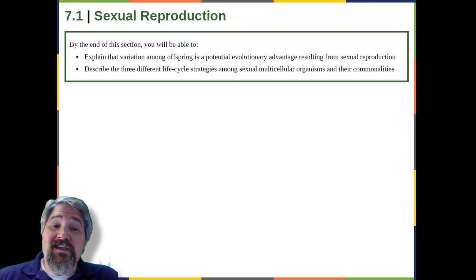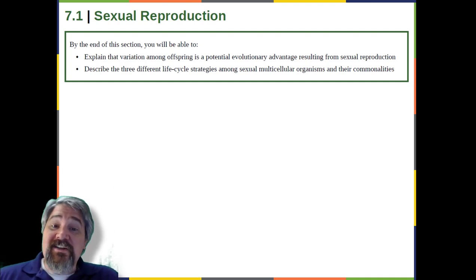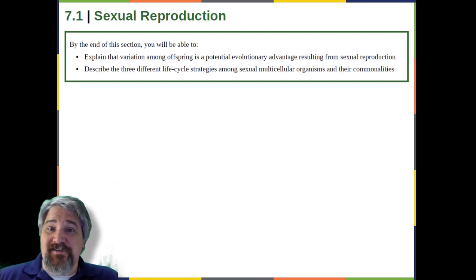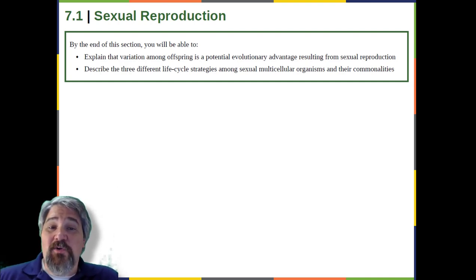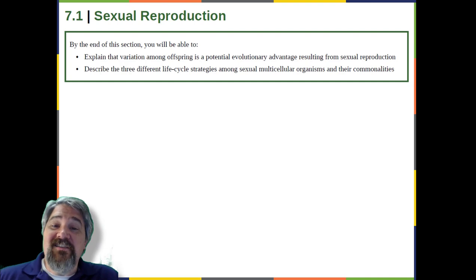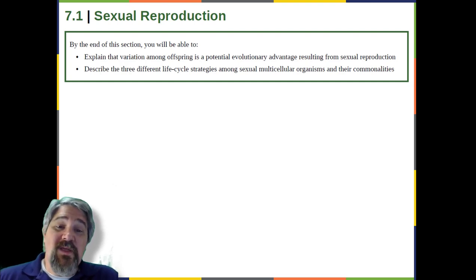Indeed, some organisms that lead a solitary lifestyle have retained the ability to reproduce asexually. In addition, asexual populations only have female individuals, so every individual is capable of reproduction. In contrast, the males in a sexual population — about half the population — are not producing offspring themselves. Because of this, an asexual population can grow twice as fast as a sexual population in theory. This means that in competition, the asexual population would have the advantage. All of these advantages to asexual reproduction, which are also disadvantages to sexual reproduction, should mean that species with asexual reproduction should be more common.